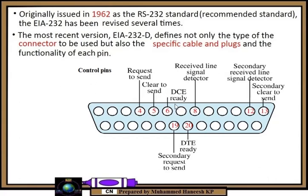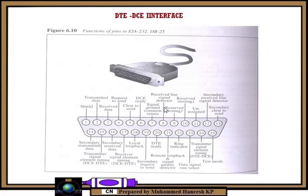Pin number six is DCE ready — data control terminal equipment. Pin number eight is received line signal detector. Pin number 12 is secondary received line signal detector. Pin number 13 is secondary clear to send. Pin number 19 is secondary request to send. Pin number 20 is DTE ready. Here we can see the DTE–DCE interface.